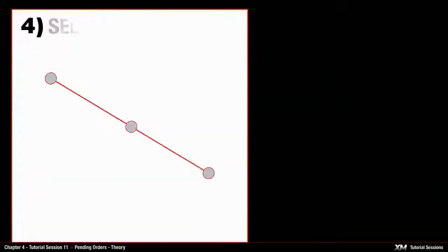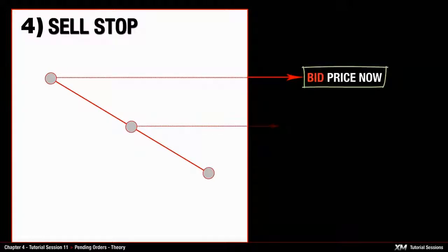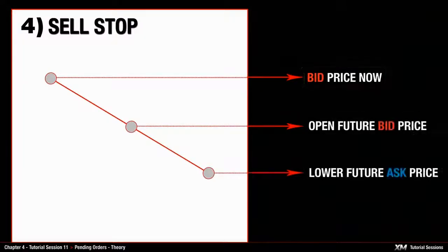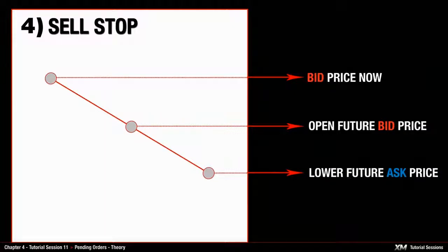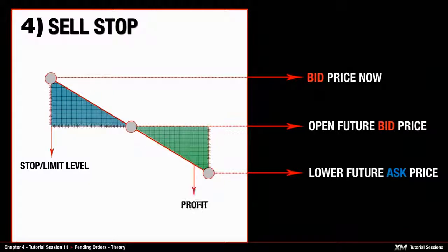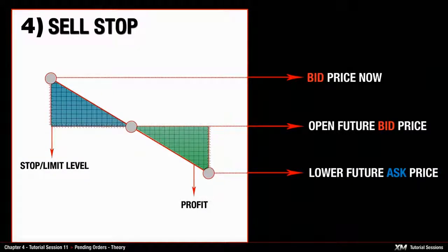The fourth type of pending order is sell stop. All sell orders are opened at the bid price and closed at the ask price. Sell stop orders should be opened at the lower future bid price. To make a profit on sell stop orders, the closing ask price needs to be lower than the opening bid price.